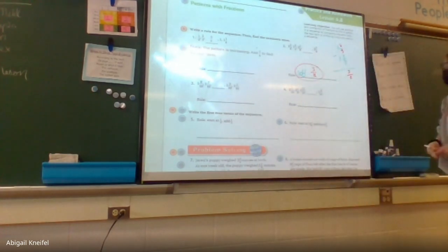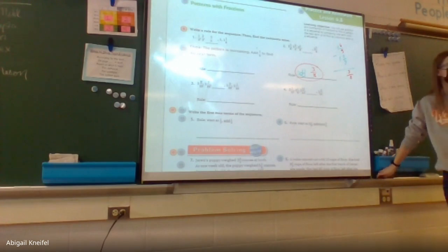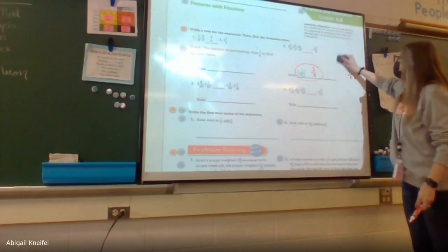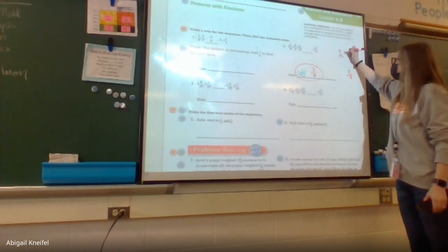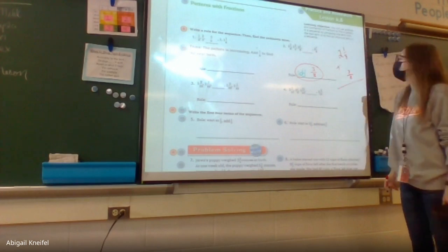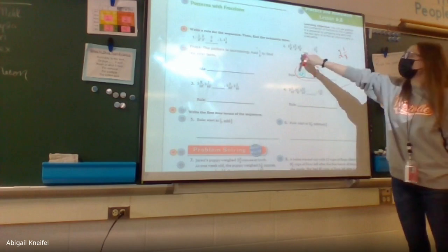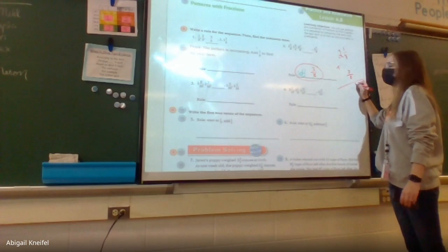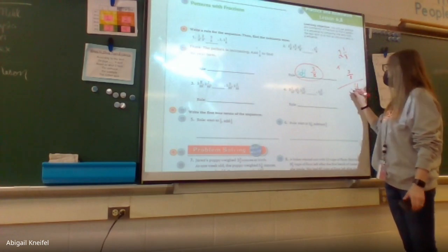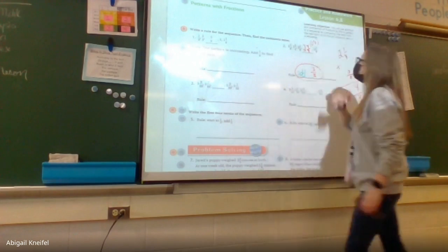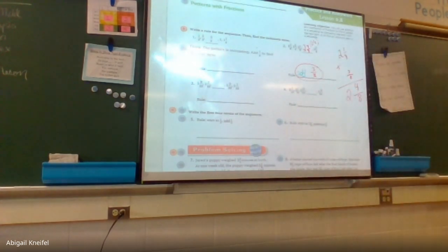Now that I know the rule, how do I find the missing digit? I add the rule to the last digit before the blank: one and three eighths plus three eighths. Three plus three is six? No — one and three, with eight stays the same, two plus nothing is two. The missing digit is two and four eighths, which should be written as two and one half in simplest form.